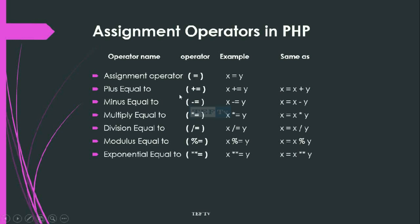Then we have plus-equals-to. This type of assignment operator is written as X plus-equals-to Y. This is the shortcut way of describing the operation X = X plus Y. When the result of X plus Y is generated, that result will be assigned to variable X.